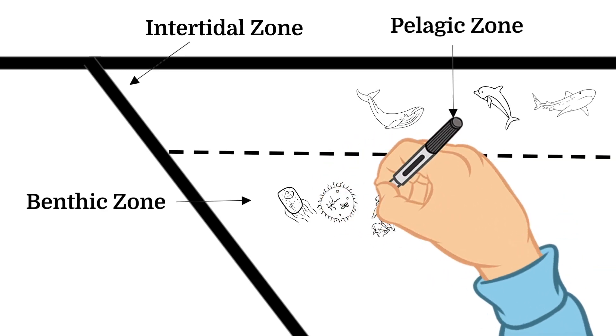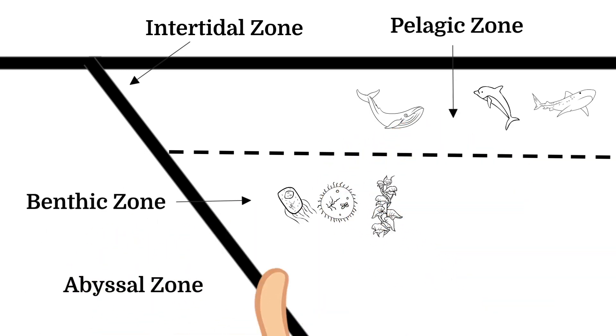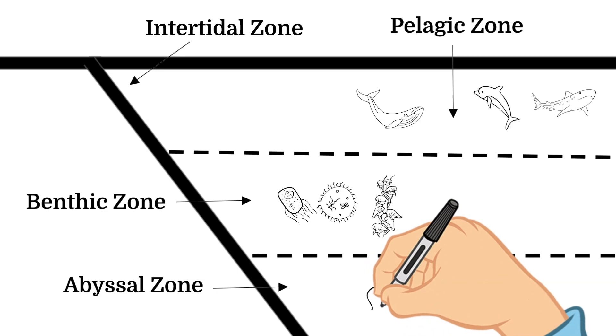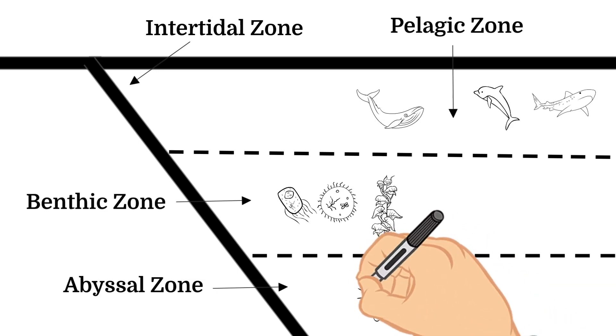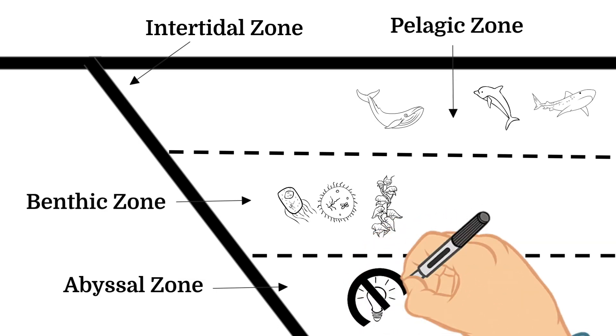And last is the abyssal zone which is the deepest part of the ocean. Due to this, not a lot of biodiversity is found here. Mainly bacteria and invertebrates live down here and feed on decomposing things that have dropped from higher zones.